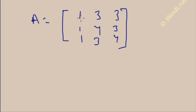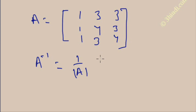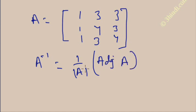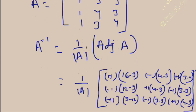Now I will show you an example. Suppose A is a matrix with specific elements. The inverse of this matrix is 1 divided by the determinant of A, multiplied by the adjoint of A. So you need to calculate the adjoint of A. Here is the matrix A for this example.